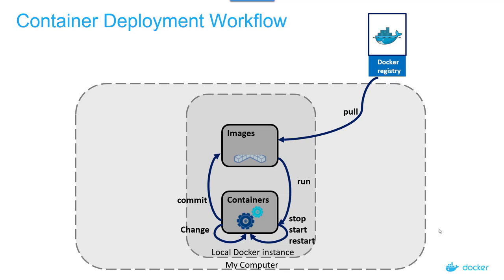If I stop the container and start again, I will lose any changes if I didn't commit. Once I commit the changes, I have a new layer — it will be another image with only the delta between the original image and the new changes. This is the beauty of Docker containers: if the difference is very small, it can be transferred very quickly over the network. I also tag this change so I can distinguish this image from other images, then push to the Docker registry to save it.